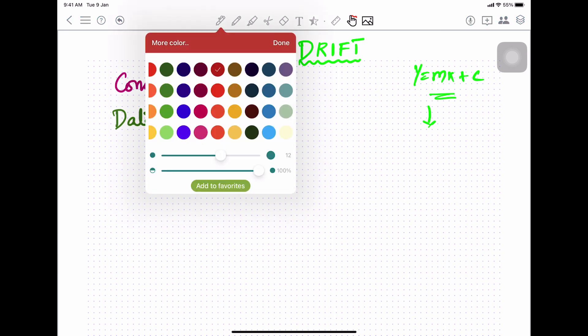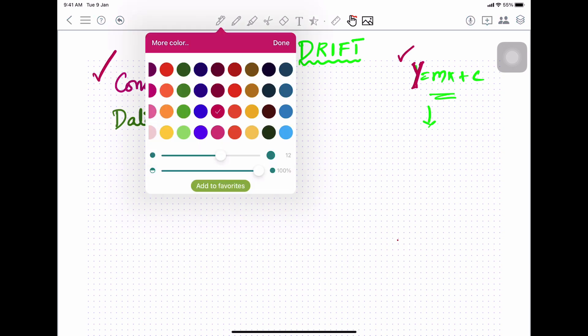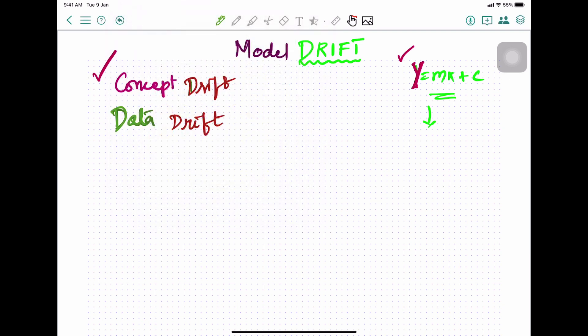Now what is concept drift and data drift? It's quite simple. Whenever you have got a model like y = mx + c, when Y changes, when the statistical nature and properties of Y changes - Y which is the actual variable that you are trying to predict - whenever the nature or statistical properties of the variable that you are predicting changes, that is called concept drift. Whenever the nature of the predictors, the explanatory variables change, then that is called data drift. So if Y changes, that's called concept drift. If the characteristics of X changes, then it's called data drift.